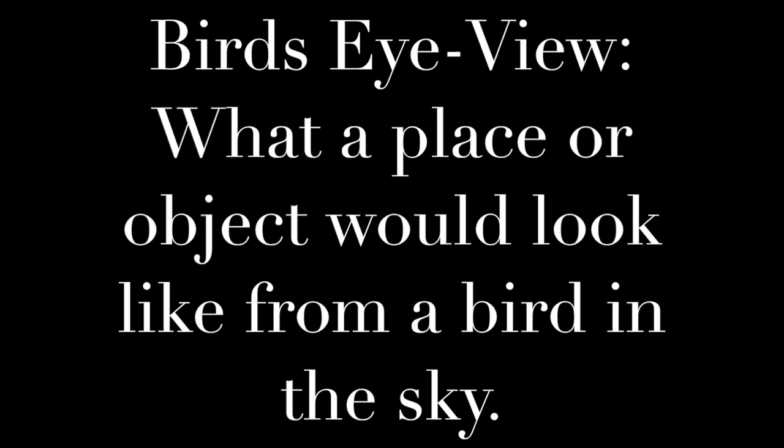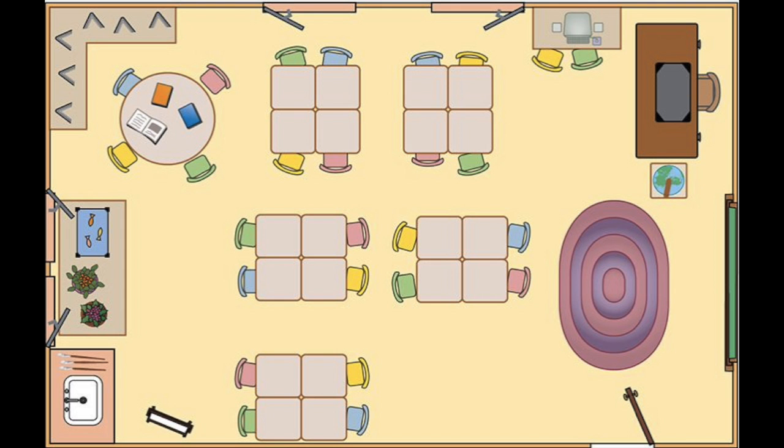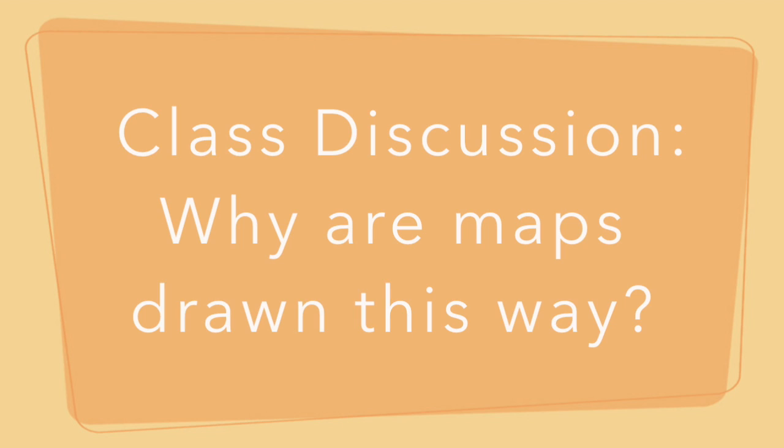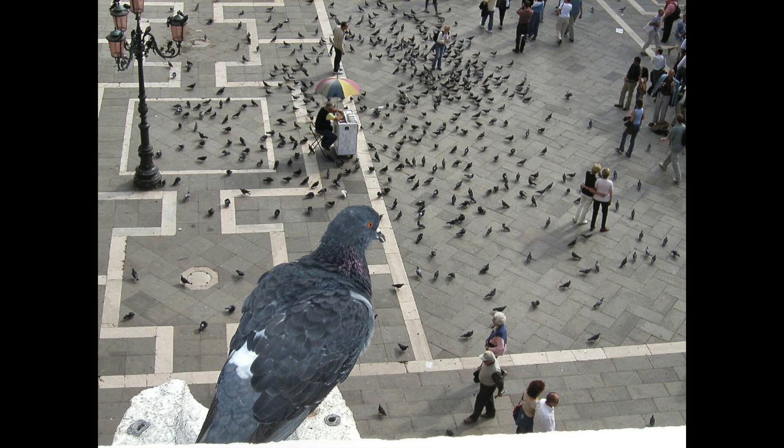Stage 2 is where students develop an understanding of bird's eye view. The term bird's eye view is explicitly defined to all students, ensuring that students have a universal understanding of the word. The students are given an example of what a classroom might look like from this angle, catering to visual learners and providing all students with an understanding. From there, the teacher holds a class discussion about why maps might be drawn this way and again uses open-ended questions to develop critical thinking.